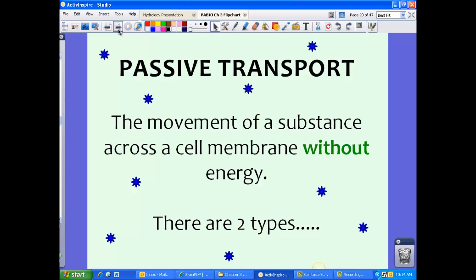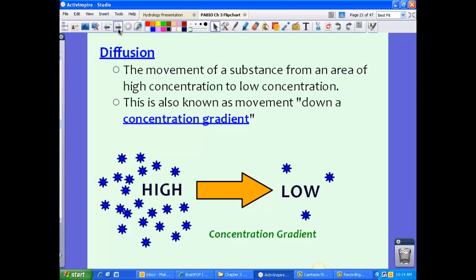Now there's two types of passive transport that we're going to discuss. The first is called diffusion. Diffusion is the movement of a substance from an area of high concentration to low concentration. You might hear me talk about how things move down a concentration gradient. Think of it in terms of you on a subway or you in a packed room at a big party.